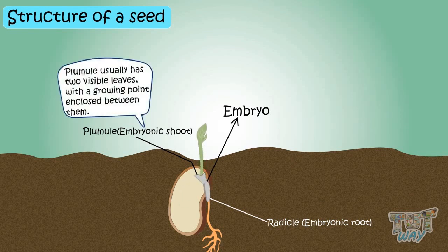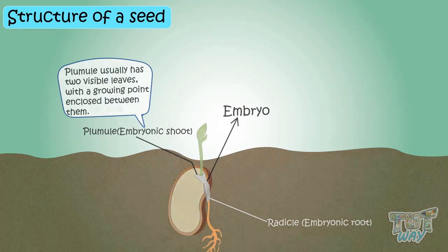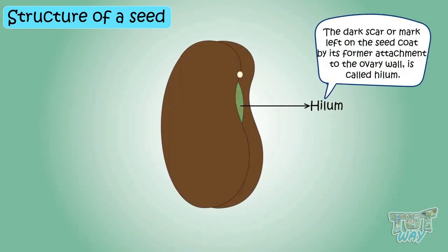The plumule usually has two visible leaves with a growing point enclosed between them. There is a scar on the seed coat from its former attachment to the ovary wall, which is known as the hilum.